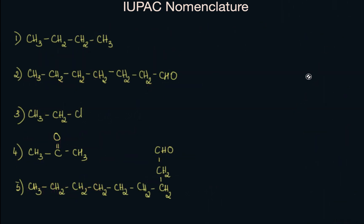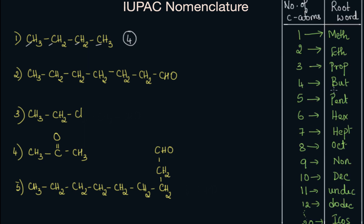Now let's find the root words for these practice compounds. In the first compound, we have one, two, three, four — four carbon atoms. The root word used for four carbon atoms is but. So the root word here is but. Now for the second compound, we have one, two, three, four, five, six, seven. If there are seven carbon atoms, the root word used is hept. So the root word here is hept.